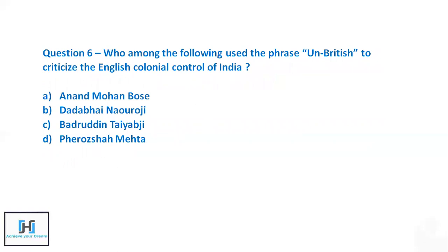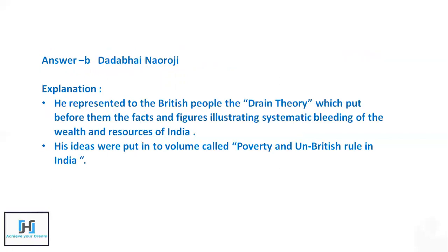Question 6: Who among the following used the phrase 'un-British' to criticize English colonial control of India? Options are Anand Mohan Bose, Dadabhai Naoroji, Badruddin Tyabji, or Pherozeshah Mehta — all moderate Congress leaders. Dadabhai Naoroji wrote the famous book 'Poverty and Un-British Rule in India,' in which he presented the Drain Theory, arguing that the poverty of India was caused by British colonial exploitation. So the answer is Dadabhai Naoroji.